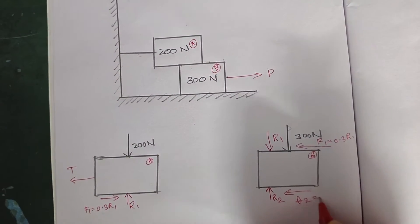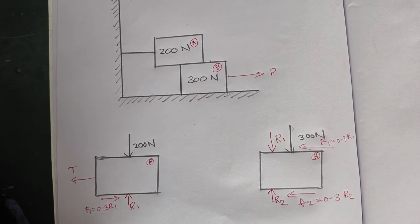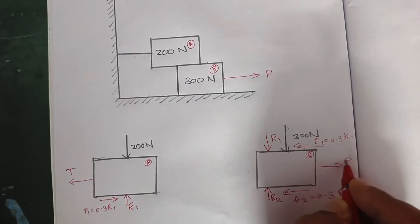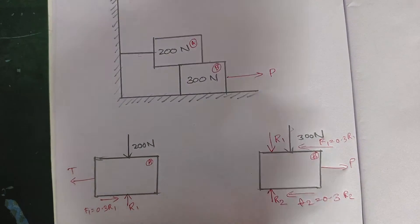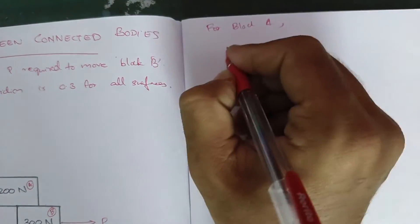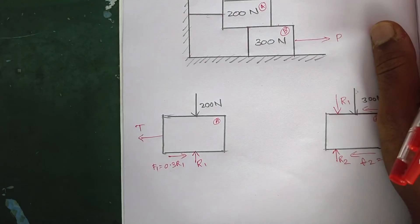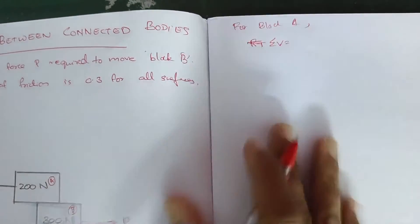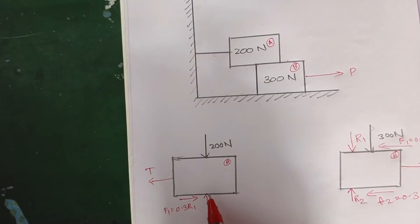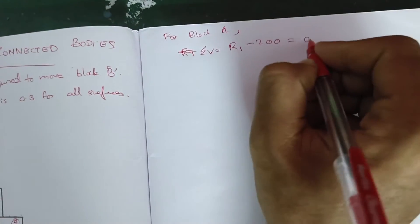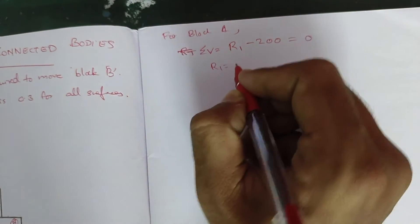F2 is equal to 0.3 R2. Then we have this free body diagram. For block A, applying the vertical component, sigma V equals zero. R1 value is determined from the equilibrium equation.